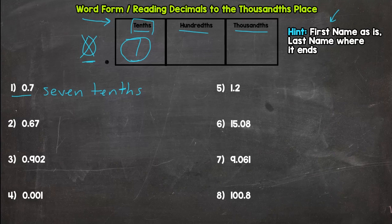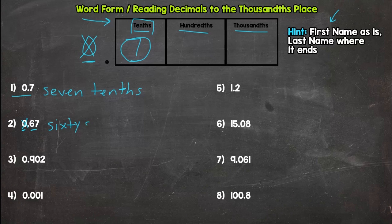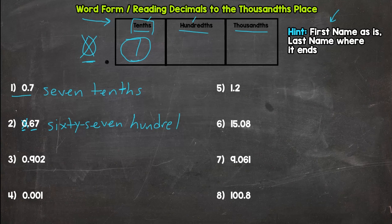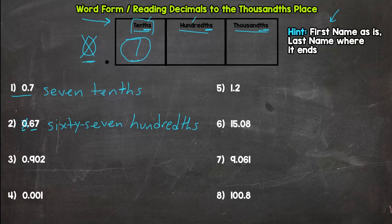Number two: we have zero wholes, so we don't include that in our word form. First name as is — that's sixty-seven. Last name where it ends: one place over is tenths, two places over is hundredths, so it ends in the hundredths place. You would say 67 hundredths. Important note: all of these decimal place names end in 'ths' — it's not tens, it's tenths; not hundreds, it's hundredths; not thousands, it's thousandths. The 'ths' tells us we are to the right of the decimal.